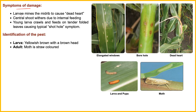Regarding symptoms: larvae mine the midrib to cause dead heart. The caterpillar larvae create a hole in the middle. You will see dead heart symptoms. Central shoots die due to internal feeding. Bore holes develop, and the caterpillar gets into the stem — this is how the damage progresses in maize stem borers.